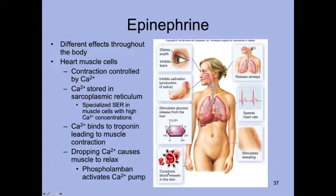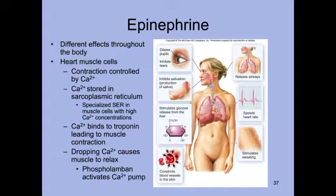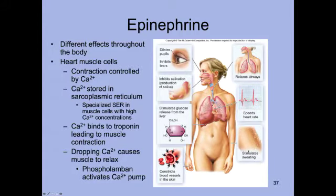We also see constriction of blood vessels — arterial and venous blood vessels tighten up to increase blood pressure. Airways relax, allowing a much deeper and larger breath. Heart rate increases, with heart muscle cells beating faster and more intensely to get oxygen and extra glucose to different parts of the body. All of this cellular activity generates a lot of heat, so we start sweating to cool off.